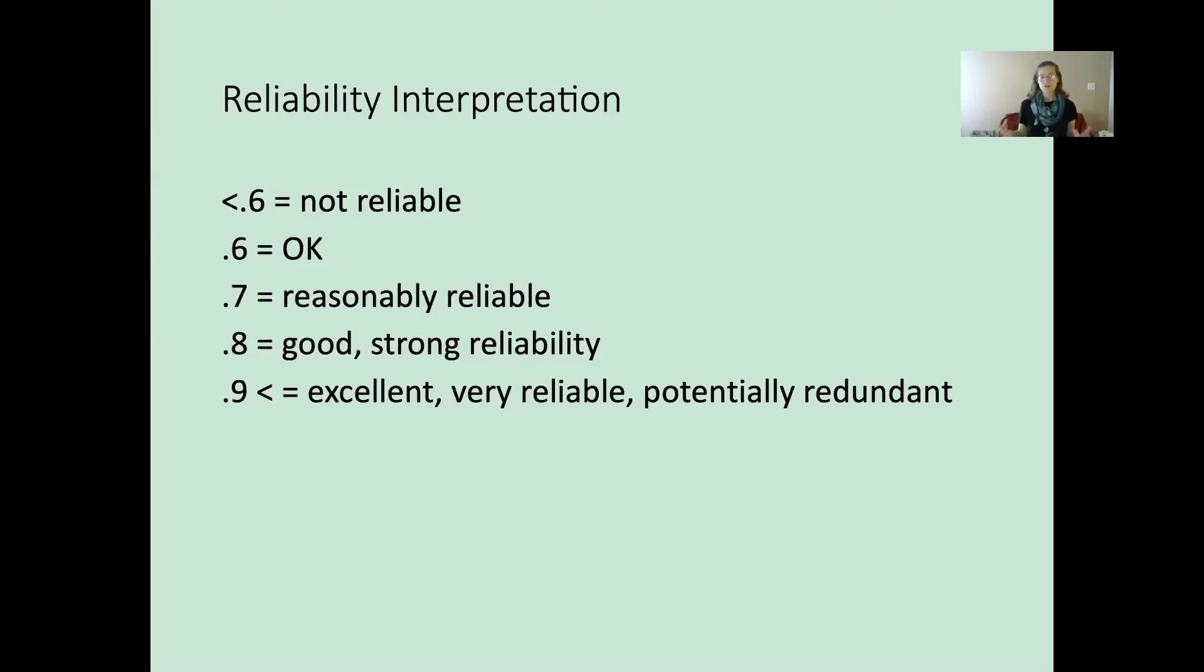0.8 is very good and strong. 0.8 to 0.9, we'd love to see that. 0.7, we don't like to use those in clinical or educational contexts as much, but if they're just for research purposes, those are okay. 0.6 and below is not great. I see 0.65s and 0.69s and stuff like that reported in research, but they're not the best. And 0.6 or below is not reliable and you do not want to use it.